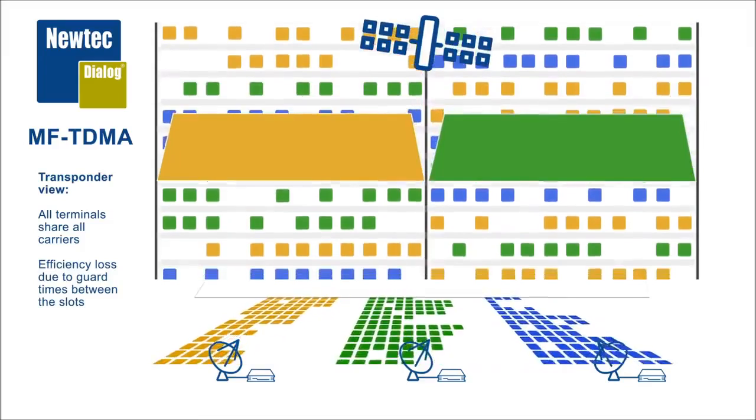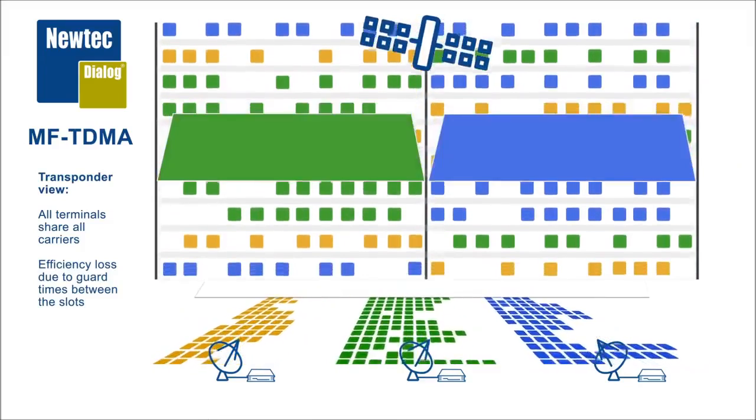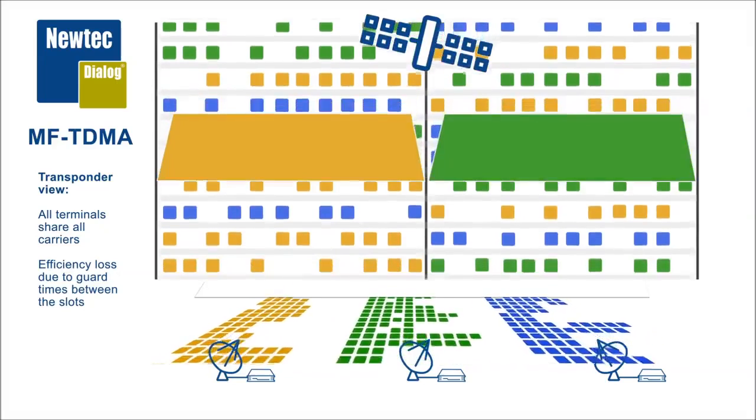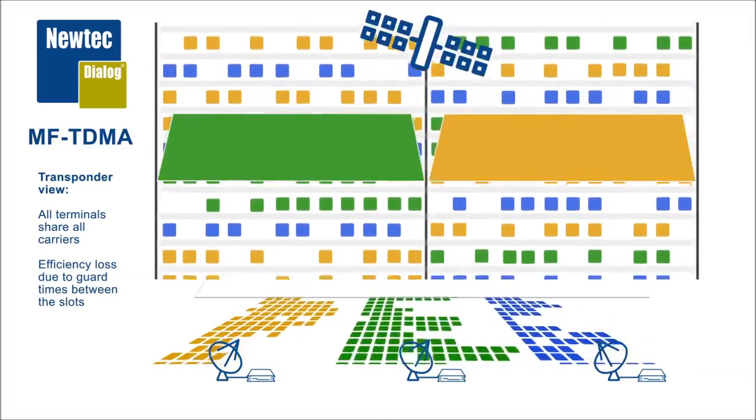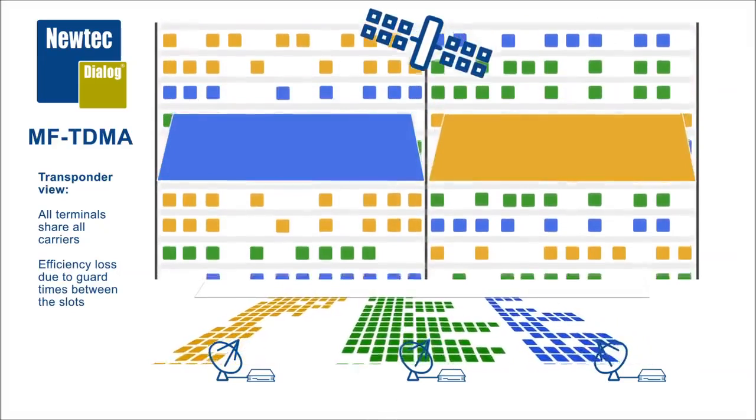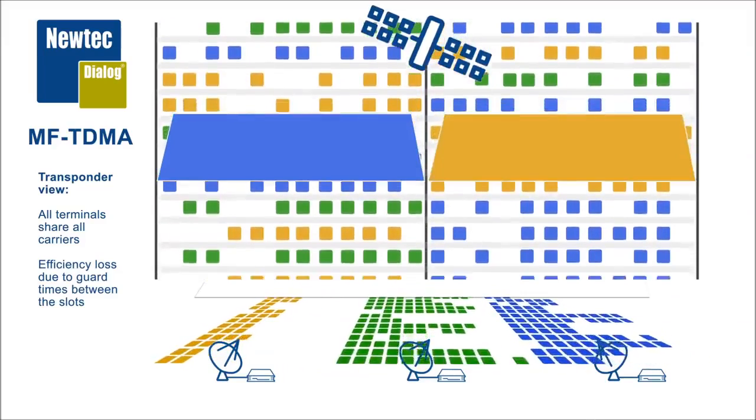With the advantage of dynamically sharing all the bandwidth among all terminals comes however a huge disadvantage, and that is the efficiency. It basically needs a lot of megahertz to get to my megabits, and that has all to do with the need for guard times and some other overhead.